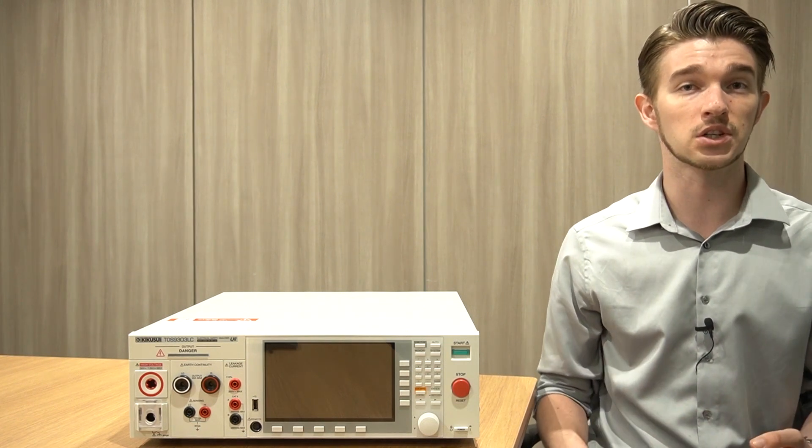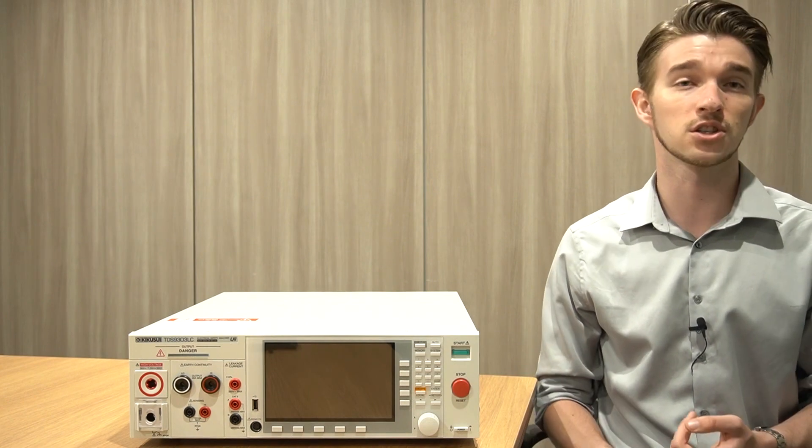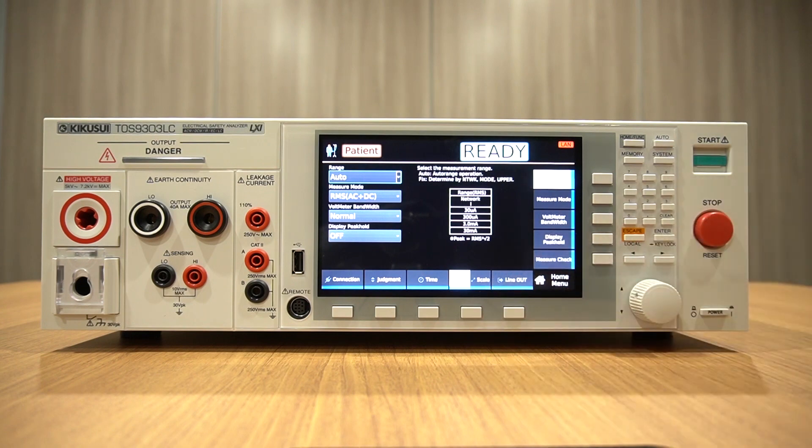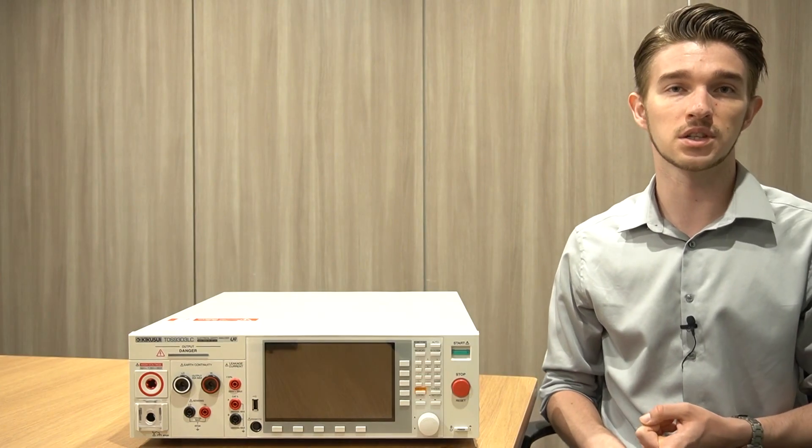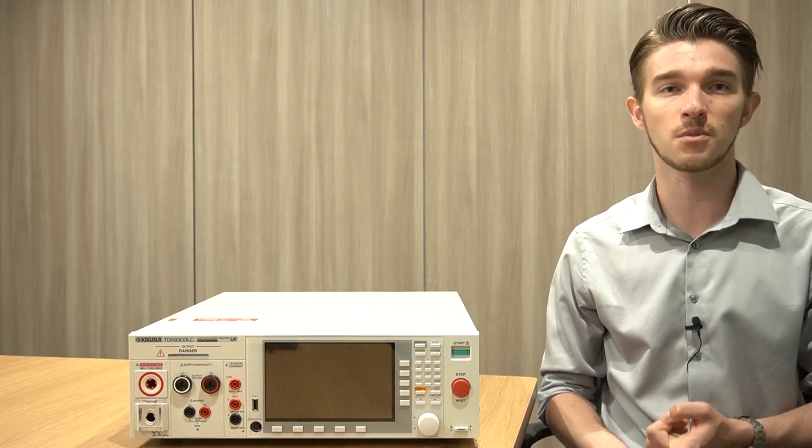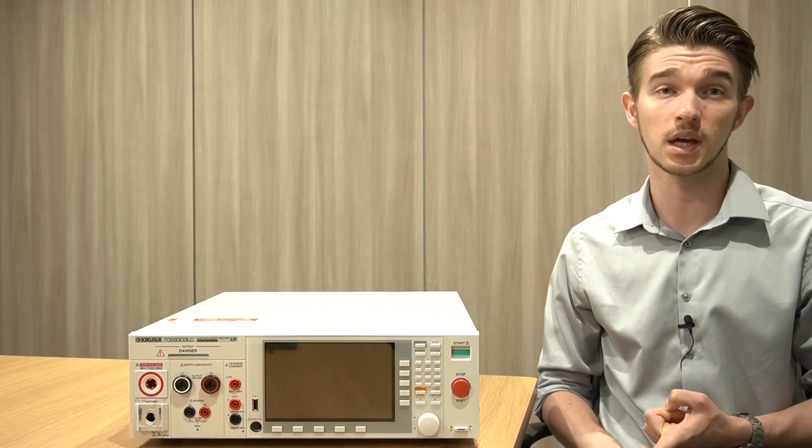Another critical feature in patient leakage current tests is the measurement range. You can access this by pressing the measurement button and then pressing Range. You can select your desired range in either peak or RMS measurements, which can detect currents as small as 0.1 microamps.